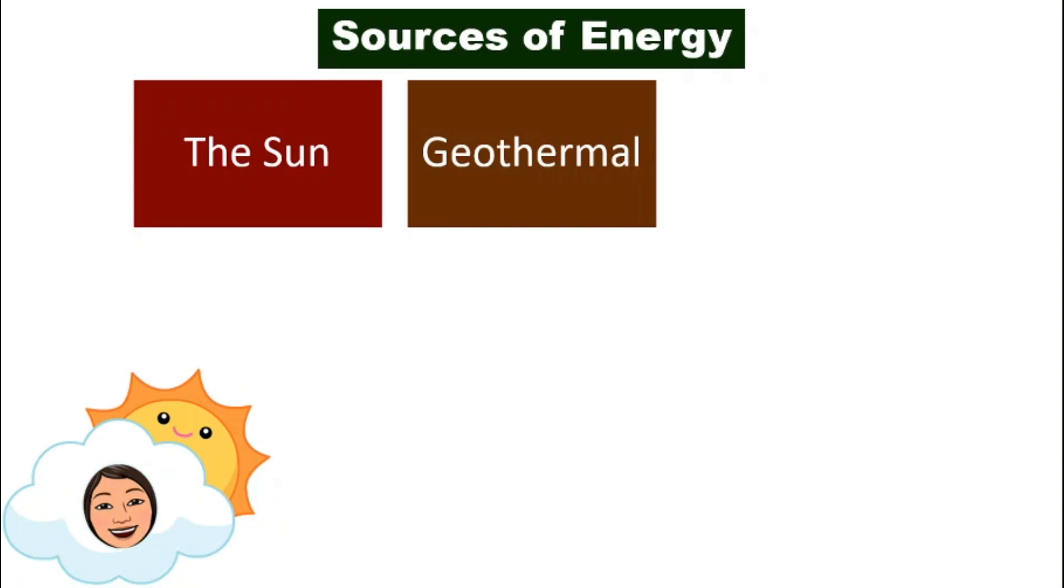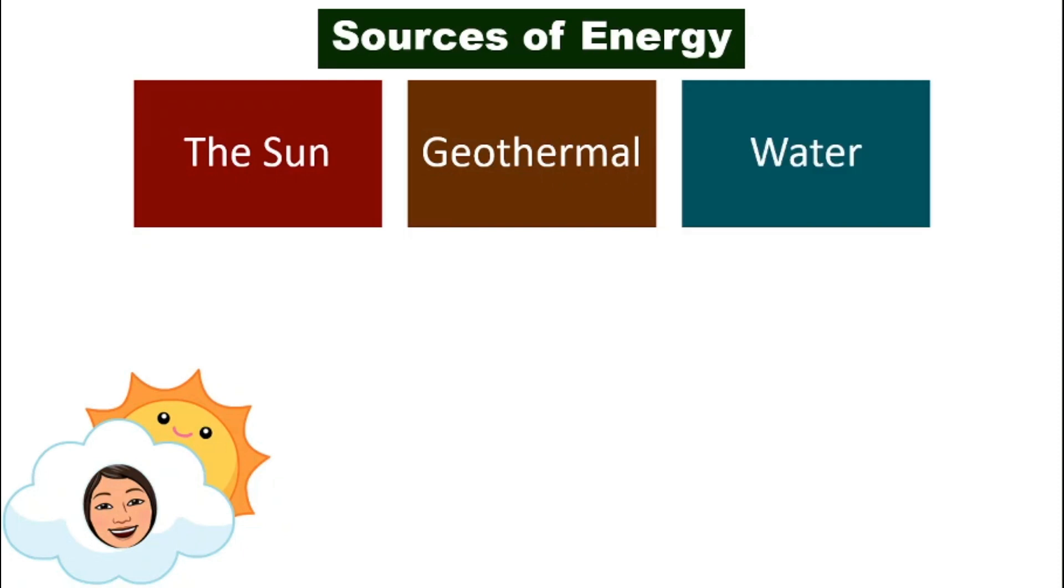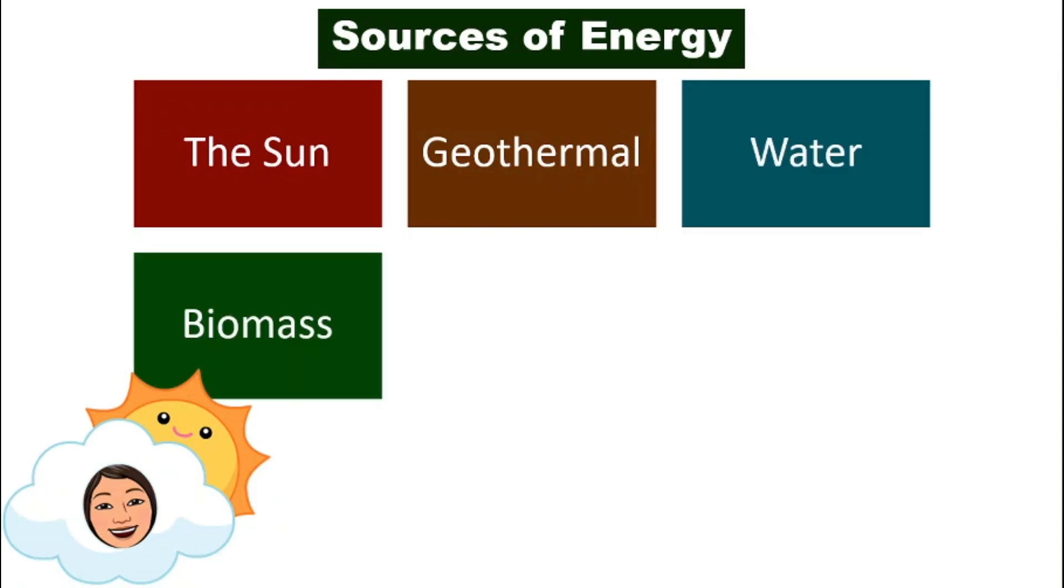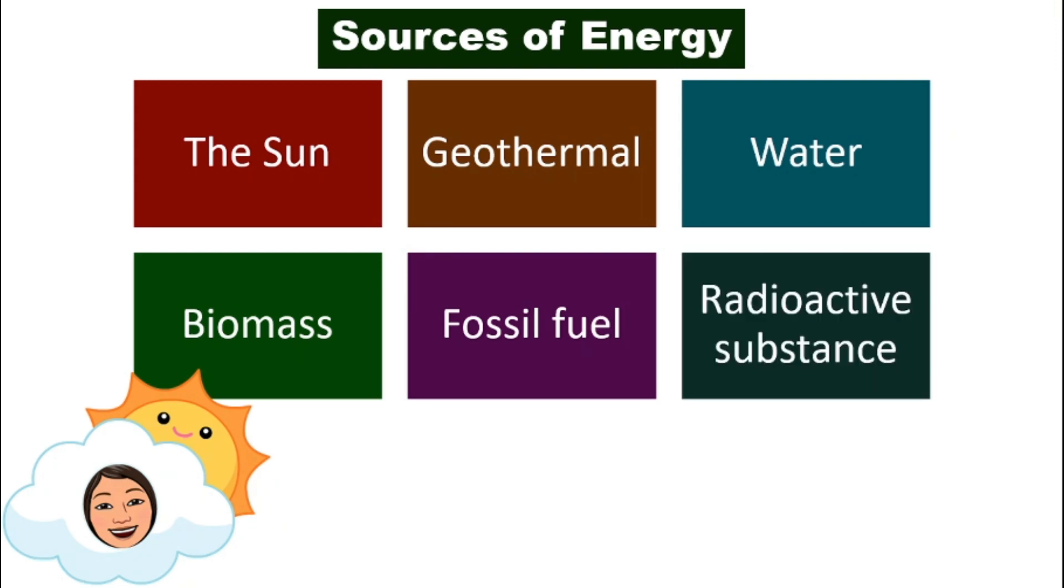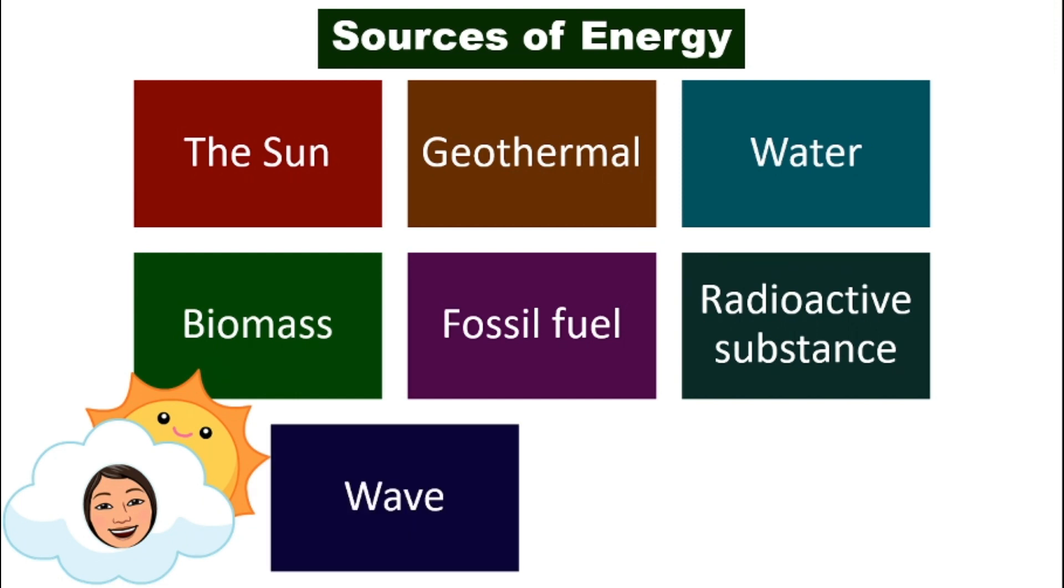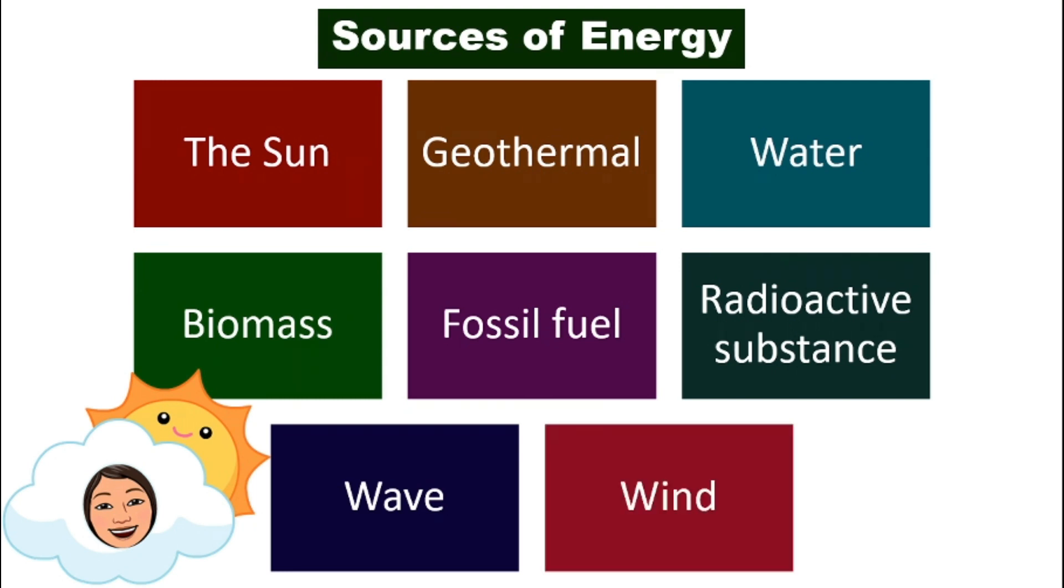And water, biomass. Biomass normally is produced or is collected from the waste of crops maybe. And then they will collect them and produce biomass energy. Fossil fuel, for example, petroleum or natural gases. Radioactive substance, these are the one that has to do with the nuclear energy, waves, and also wind.